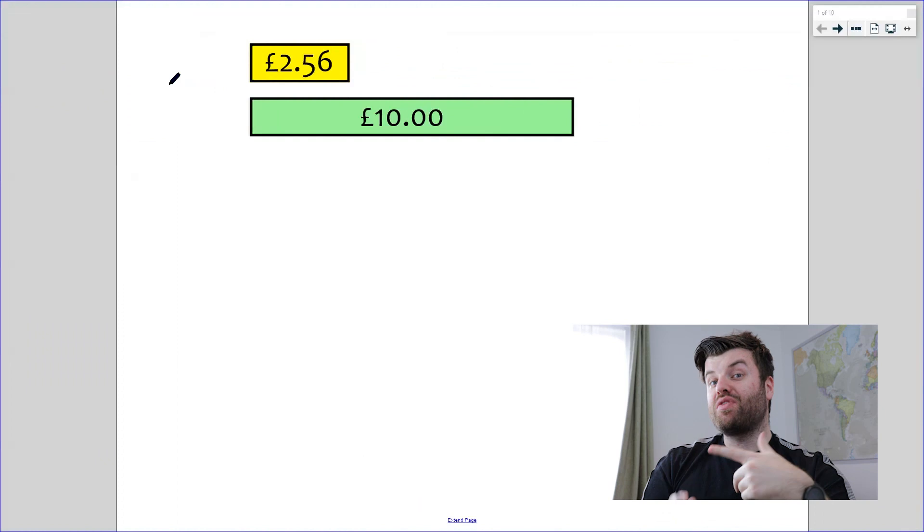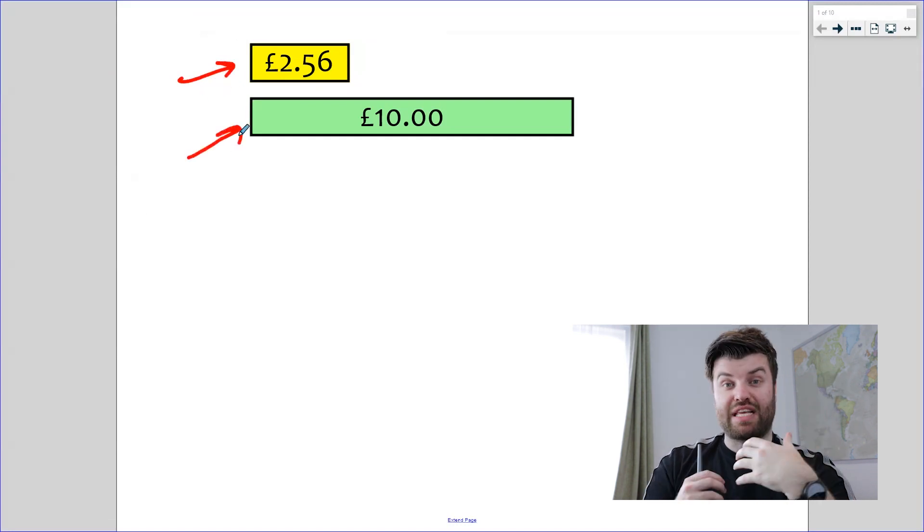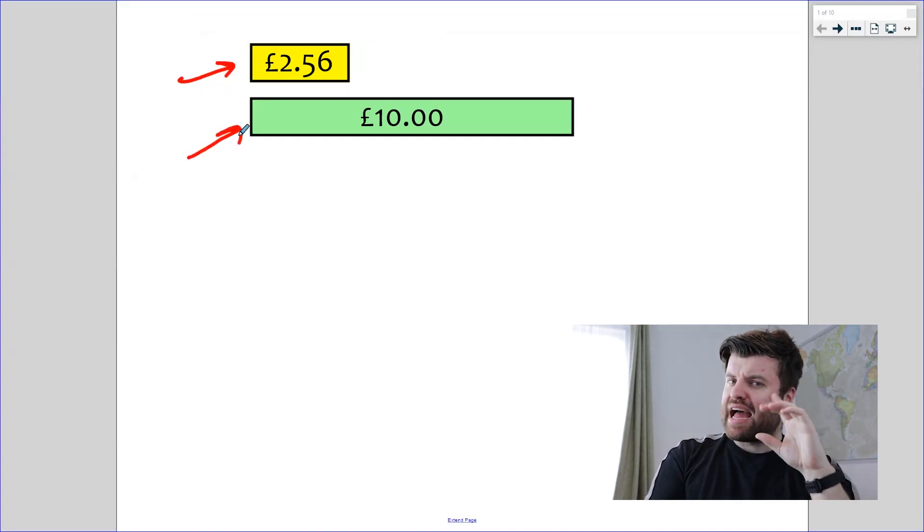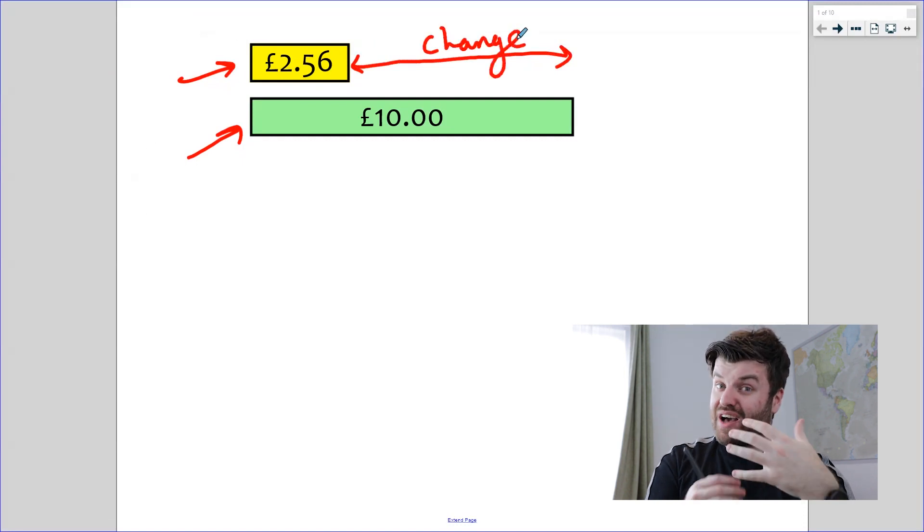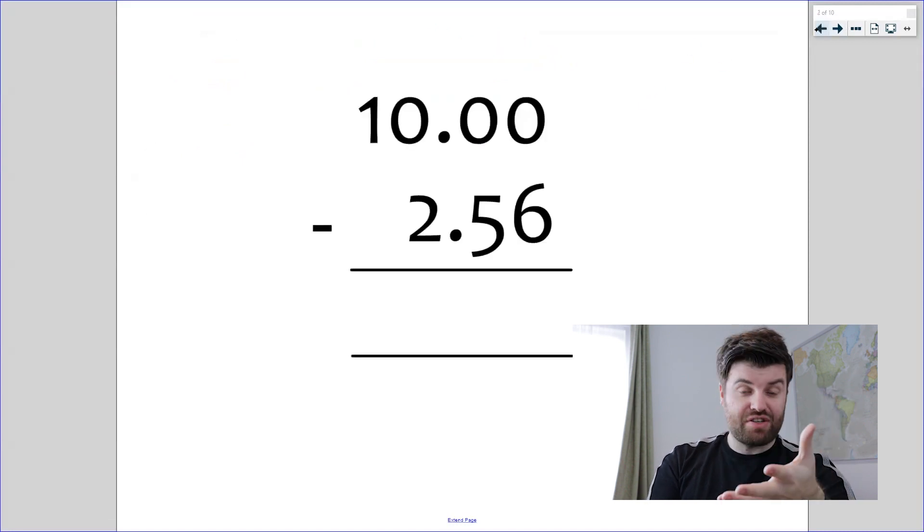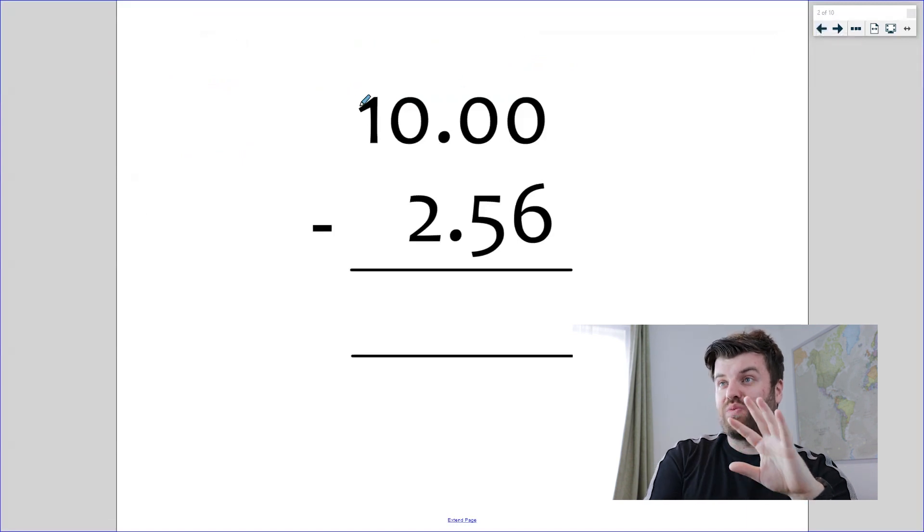Right, let's get to the bottom of this change fiasco. Find out who's right and come up with a way of getting the correct change every single time. So, on the screen now is a visual representation of the problem we've just observed. We have £2.56, which is the cost of the shopping, £10, which was given by the customer to the cashier, and we're trying to calculate the difference between these amounts, and that's this gap here. This is our change. Now, when we're finding the difference between two amounts, our first thought may legitimately be subtraction.